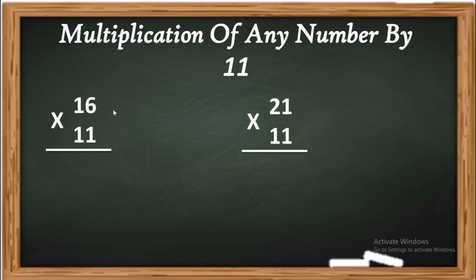For 16 into 11, you have to keep 6 as it is and 1 as it is and 1 plus 6, which is 7. So like this, 6 as it is on the right side, leave space, at right side 1 plus 6 is 7.